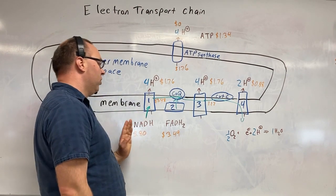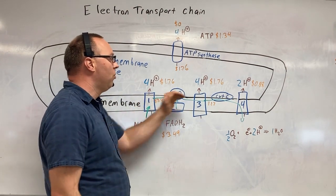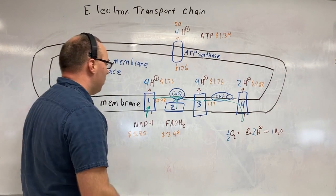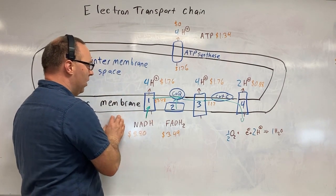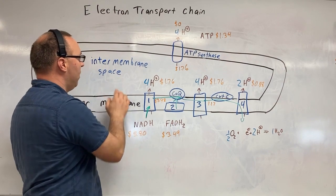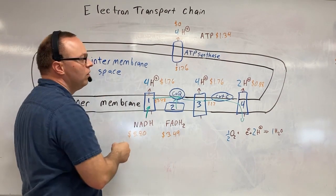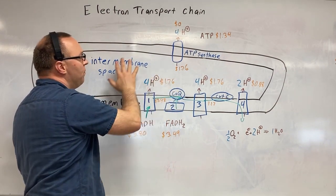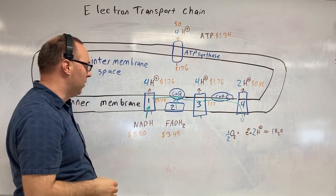What's going to happen is we're going to take the electrons and we're going to go through these complexes. What they're going to do is they're going to pump protons from here, the space in the mitochondria outside of the inner membrane space, and we're going to pump that into the inner membrane space. This is going to become very acidic. Lots and lots of acid particles here.